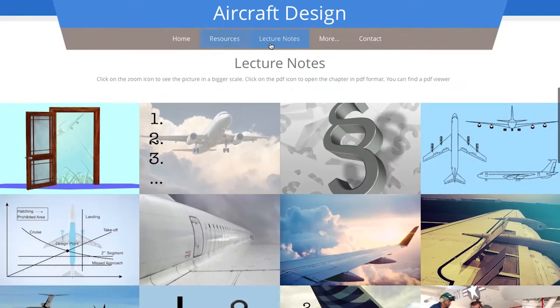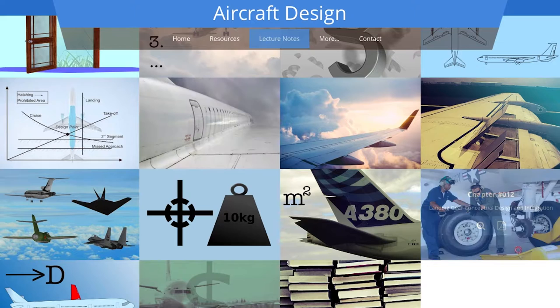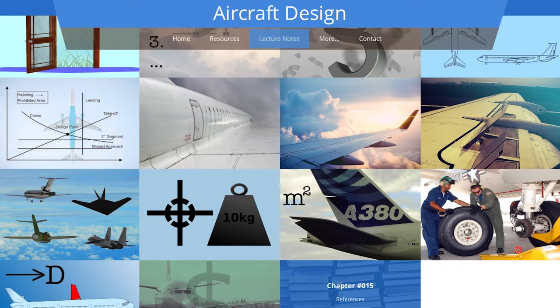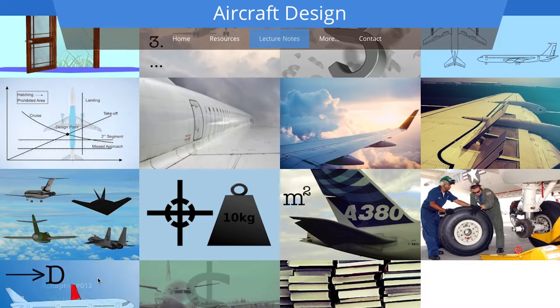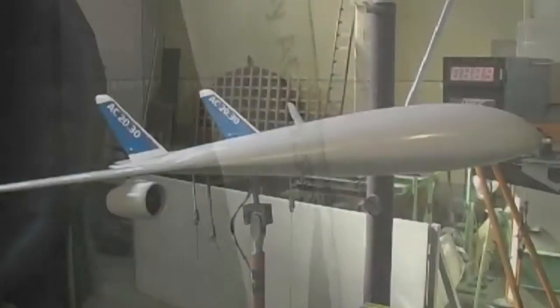We start from requirements, we go to preliminary sizing, then to conceptual design, and what we want to do in the end is optimize the airplane. Obviously you need to fulfill requirements, but that alone is not the best airplane. The airplane that succeeds as a successful product is one which is just the best of what you can achieve within this framework of requirements.